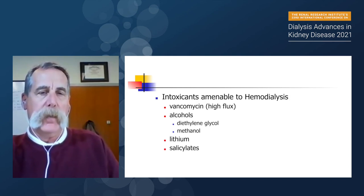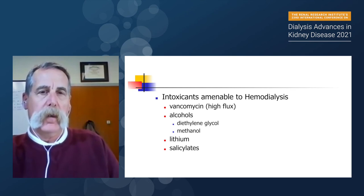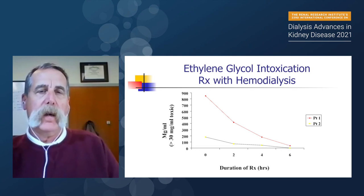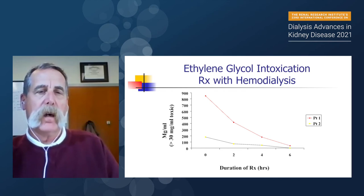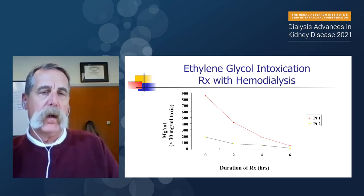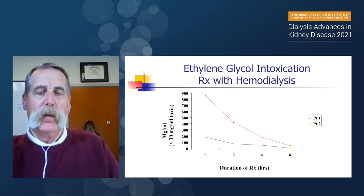Intoxications like ethylene glycol and methanol can also be removed by dialysis, as well as lithium and salicylates. This graph shows a patient who had an ethylene glycol overdose — greater than 30 mg/mL is toxic. These are two different examples of patients who underwent standard (not high-flux) hemodialysis, and over four to six hours the ethylene glycol clears very nicely.